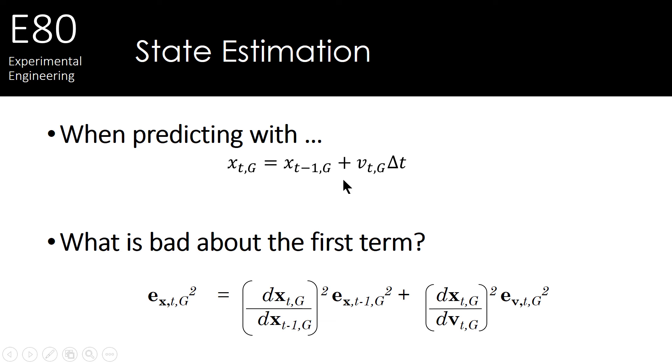But how much error should we associate with this position? Well, using our basic propagation of error equation from earlier in the course, we note that the error, or squared error, associated with this position is going to be a function of the error associated with the previous position, and the error associated with the velocity, assuming that we know the time step perfectly.